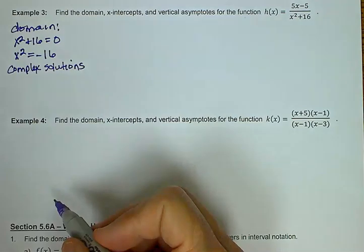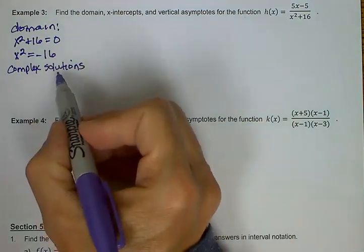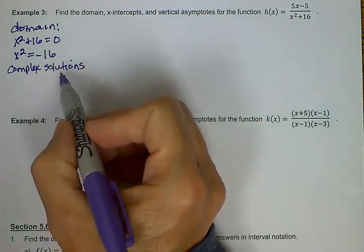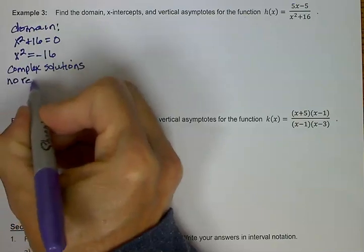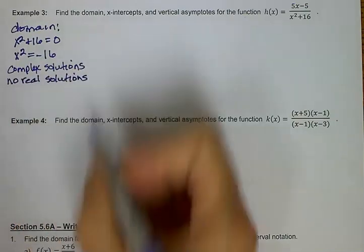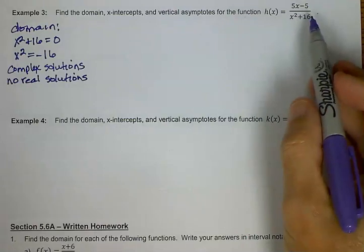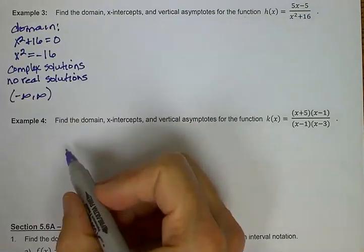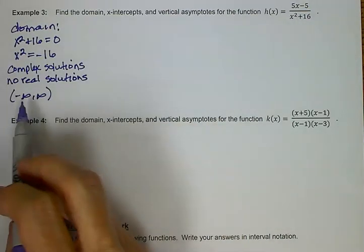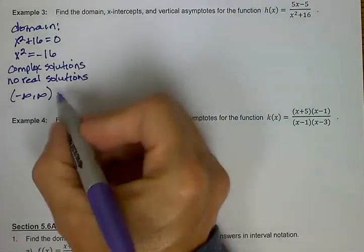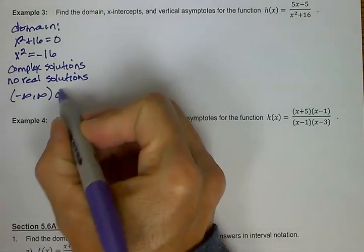And since we're talking about the graphs of these, complex solutions don't show up on the graph. There are no real solutions for this. There are no real numbers that would make our denominator equal to 0. That means our domain, as far as the real numbers, is all of the real numbers, which is negative infinity to infinity.